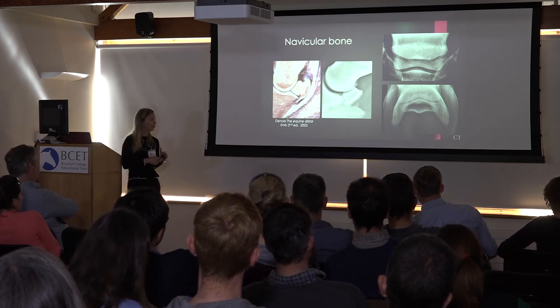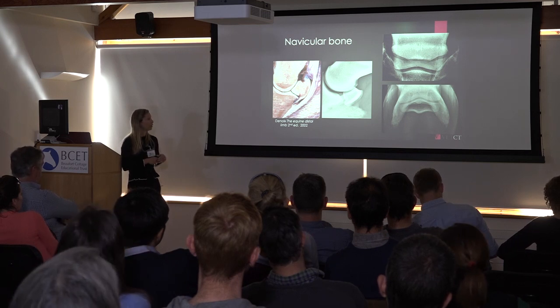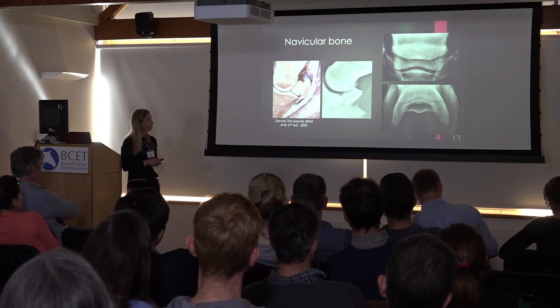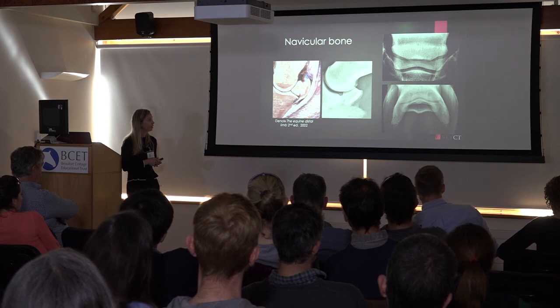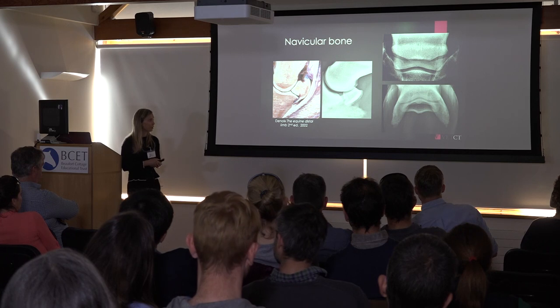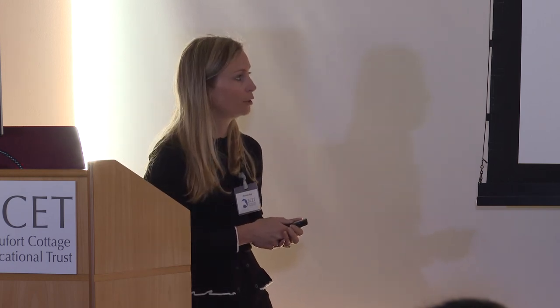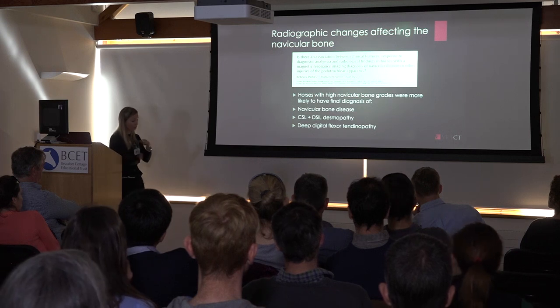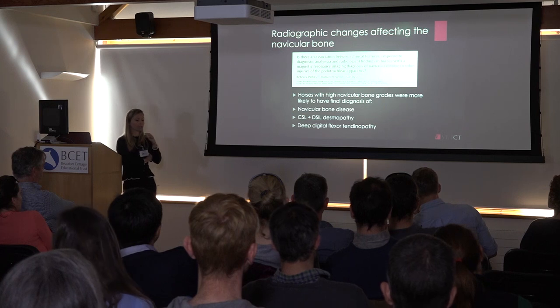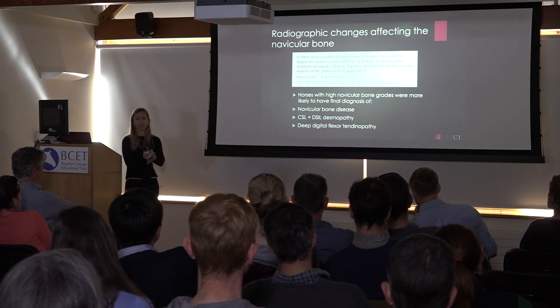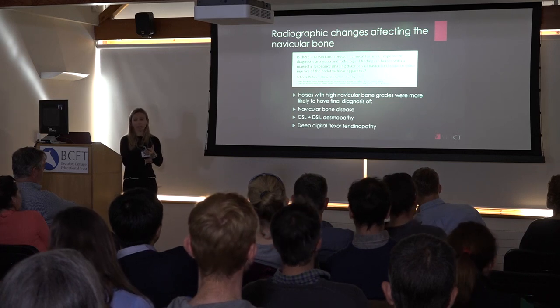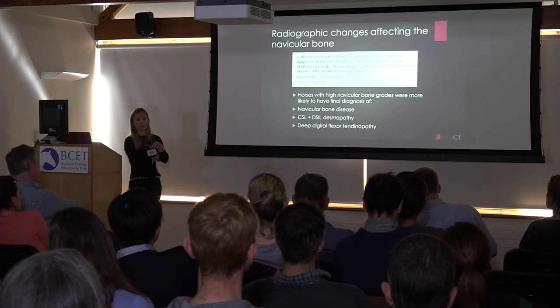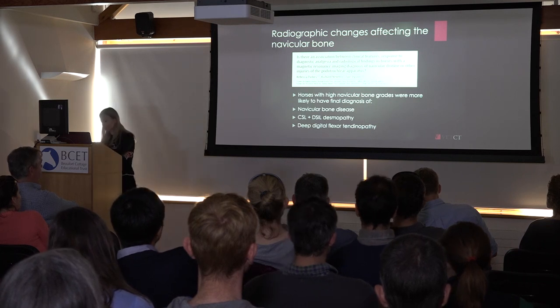The navicular bone deserves careful attention because it is in close contact with the deep digital flexor tendon, has collateral sesamoidean ligaments attaching at the proximal border, and the impar ligament at the distal border. We should look carefully at the palmar, proximal, and distal borders. Importantly, horses with high-grade navicular bone changes on radiographs are more likely to have pathology in the navicular bone itself, but also in the tendon or ligaments of the navicular bone.